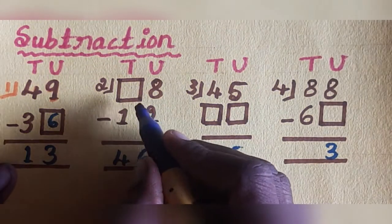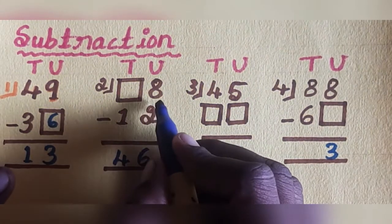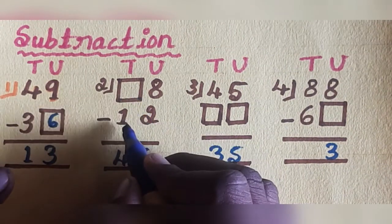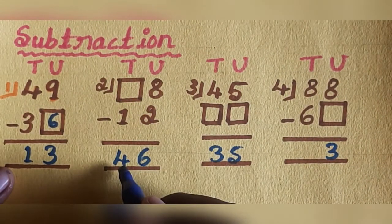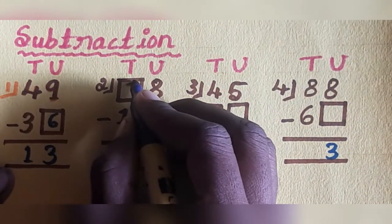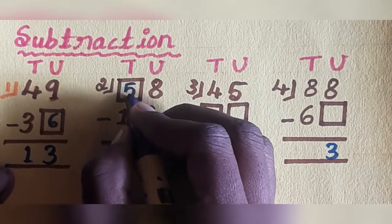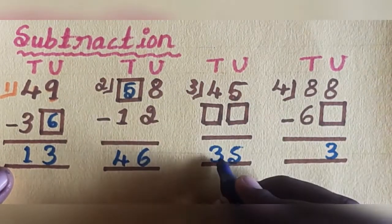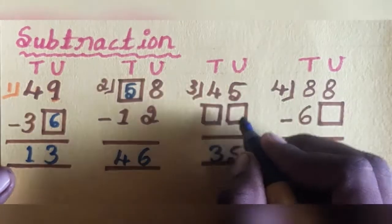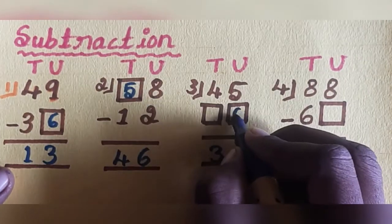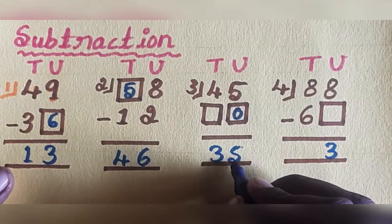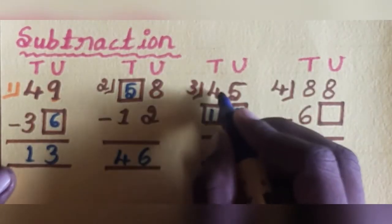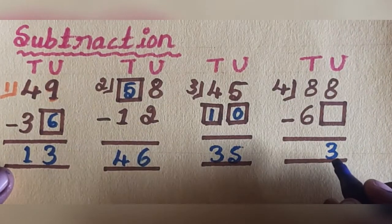Next, second one: 8 minus 2 equals 6. Dash minus 1, answer is 4. Write 5 here. So 5 minus 1 equals 4. Next: 45 dash, answer is 35. Units: 5 minus 0 equals 5. Next, tens: 4 minus 1 equals 3.